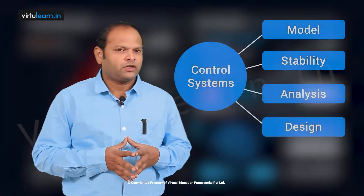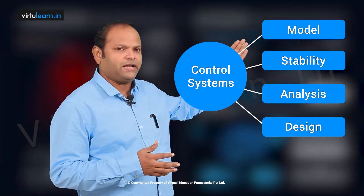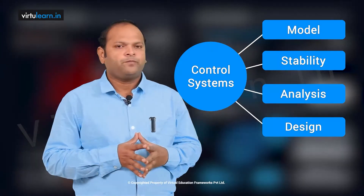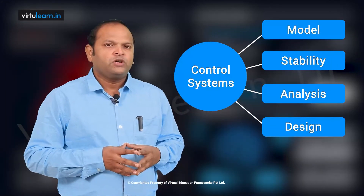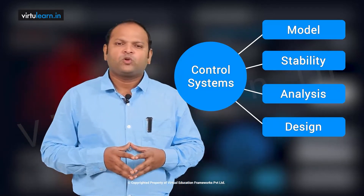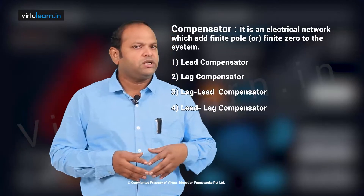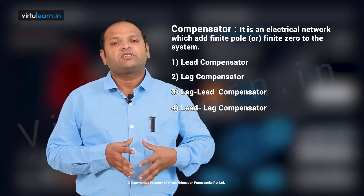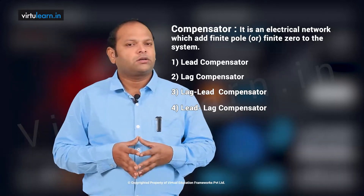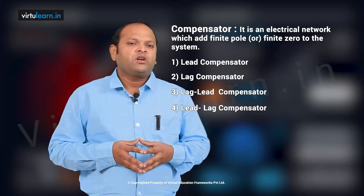We know the big picture of the control system. We have four elements: model, stability analysis, and design. The first three components are useful to get the last one, which is design. If the system is unstable, a compensator or controller is required to make it stable and to achieve a desired performance. Similarly, even if the system is stable, compensators and controllers are required to achieve the desired response.